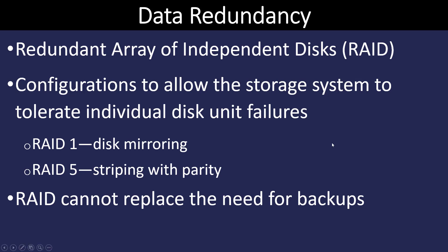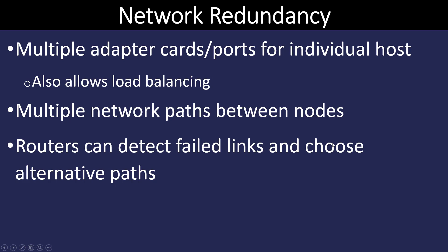RAID doesn't replace the need for backups — we still have to back up our data off-site. We also want to make sure our network has redundancy. If we look at our network diagram and see a single point where everything must go through, we have to have a plan to quickly recover if that node goes down, or create another path through it. Some equipment, routers in particular, can detect when a link has failed and create another path. A layer 2 switch is not going to do that, so we have to keep all that in mind as we design the network and make sure we have redundancy for most of our paths.